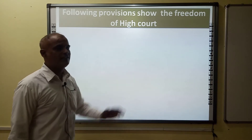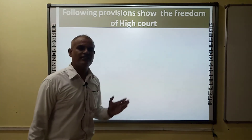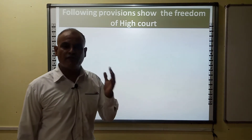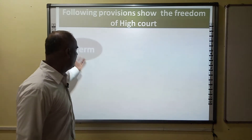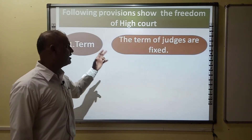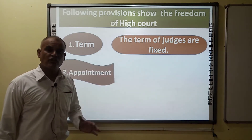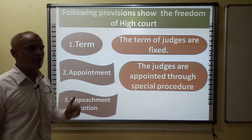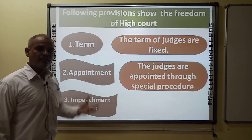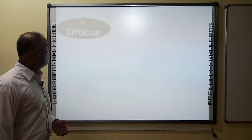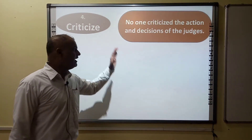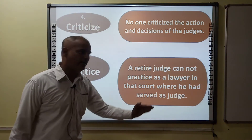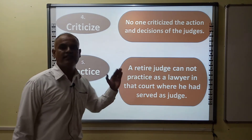The following points show the independence of the High Court, demonstrating that the Indian Judiciary is free from the Legislature and the Executive. First, the term of judges is fixed. Second, the judges of the High Court and Supreme Court are appointed through a special procedure. Third, the judges of the High Court and Supreme Court are removed only through an impeachment motion. Fourth, no one can criticize the actions and decisions of judges of the High Court and Supreme Court. Lastly, a retired judge cannot practice as a lawyer in the court where he had previously served as a judge.